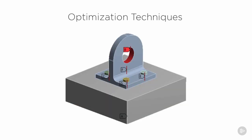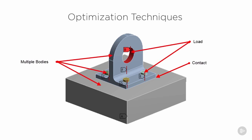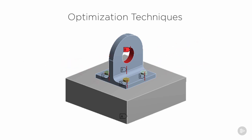Most optimization techniques can be very computationally expensive, meaning we need a lot of computer power to solve these problems quickly. The complexity of our model as it is now is very high with the use of contacts, multiple bodies, and loading steps. So in order for the calculations to be completed relatively quickly on your computer, we will need to simplify our model. Let's jump back into Workbench from where we left off in our last tutorial in order to prepare the geometry for the optimization process.